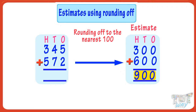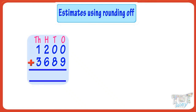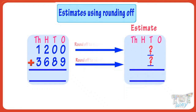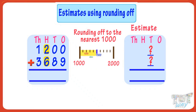Let's take another example. We have to add 1,200 and 3,689. We have to make a quick estimate by rounding off these numbers to the nearest 1,000. For rounding off to the nearest 1,000, we look at the hundreds digit. If it's less than five, we round it down to the previous thousand, and if it's greater than or equal to five, we round it up to the next thousand.